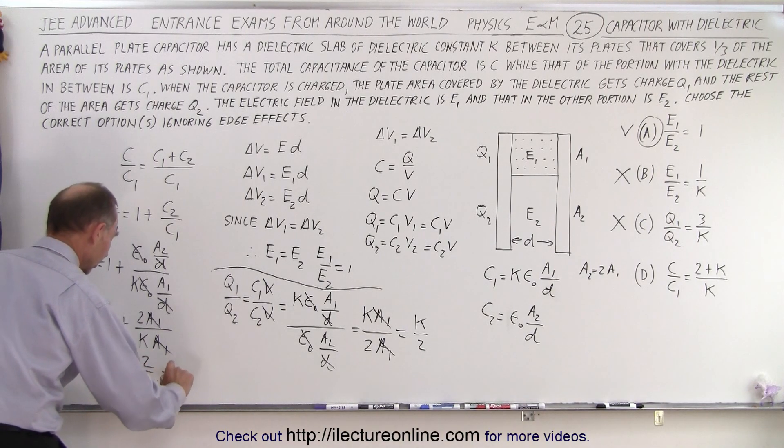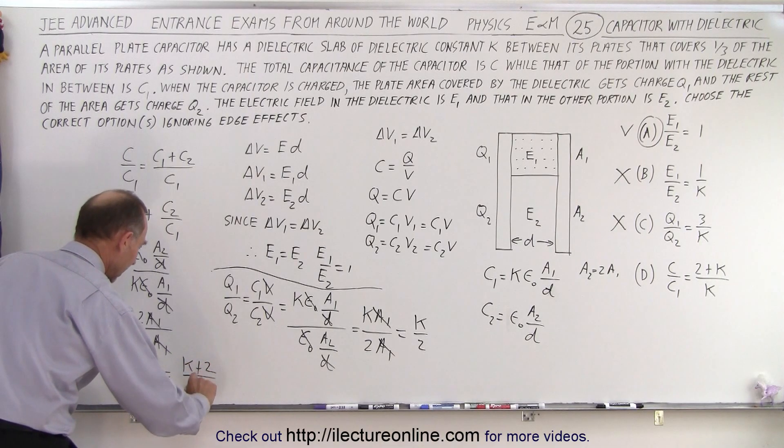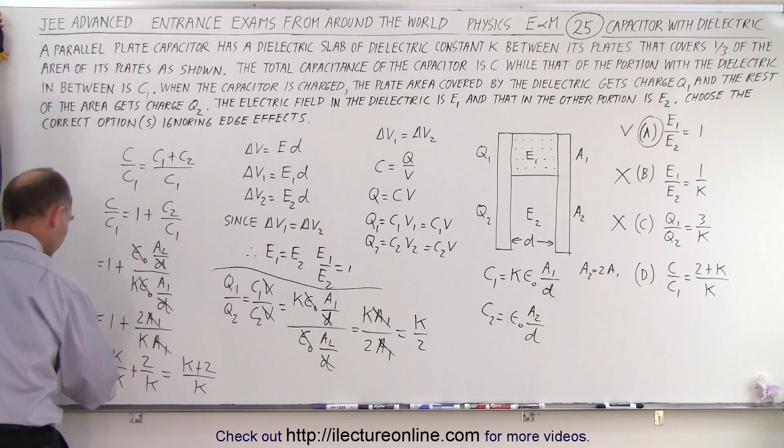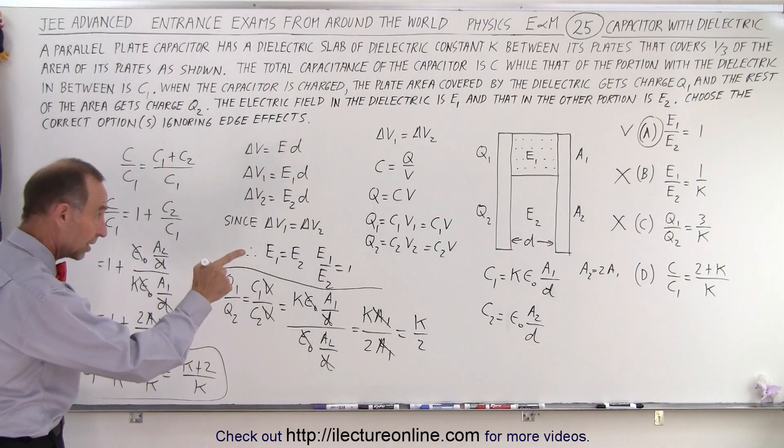which is equal to K plus 2 over K, and that was the ratio of C to C1. And notice for part D.